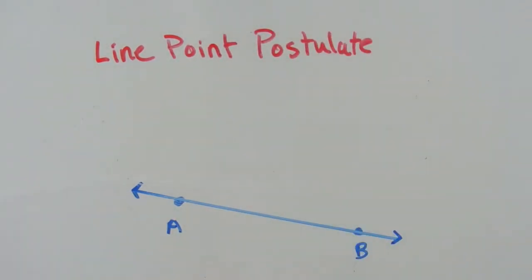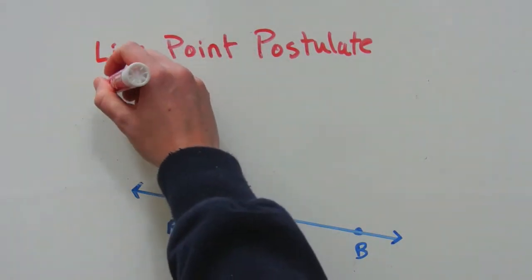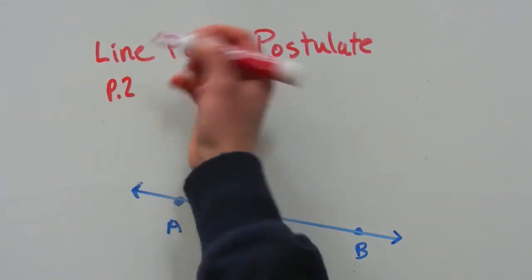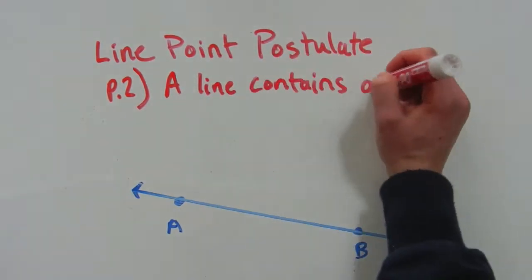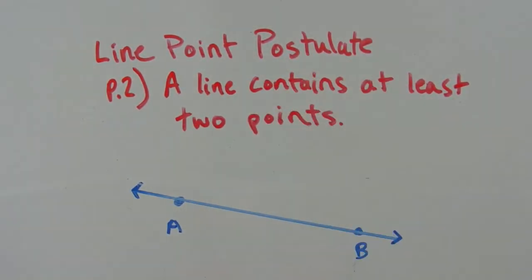Our next postulate is going to be the line-point postulate. So we're going to label that P2, since it's the second one we're going to go over. The line-point postulate states that a line contains at least two points. And we know this to be true because a line is created from two points. So every line has at least two points.